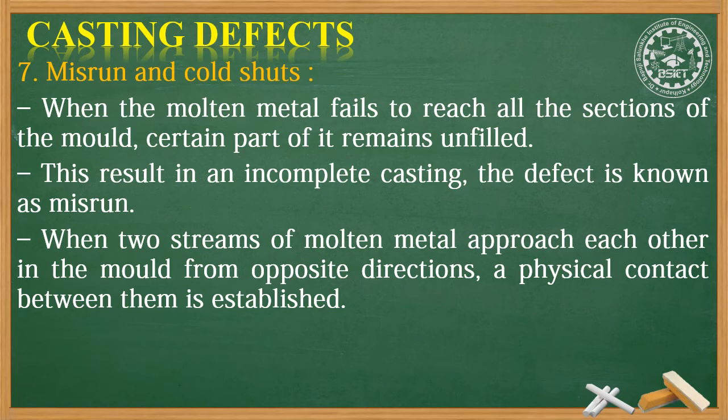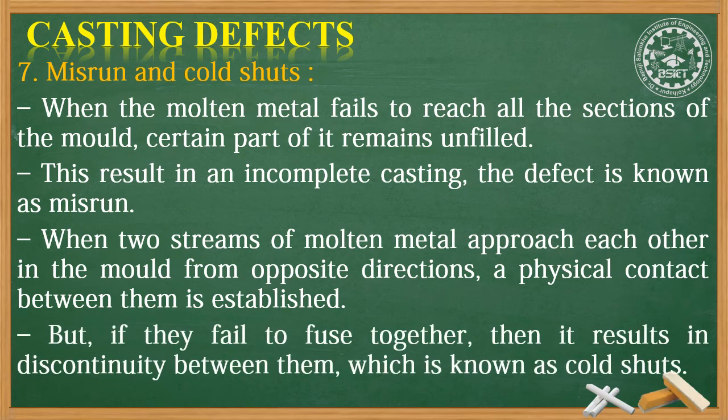When two streams of molten metal approach each other in the mold from opposite directions, a physical contact between them is established. But if they fail to fuse together, it results in a discontinuity between them, which is known as cold shuts.